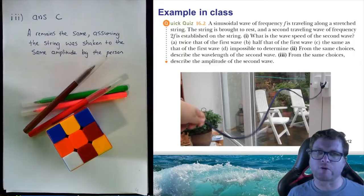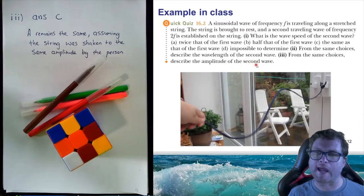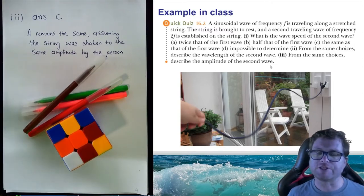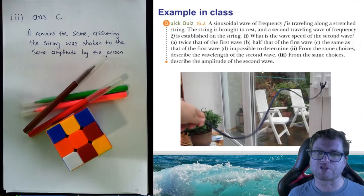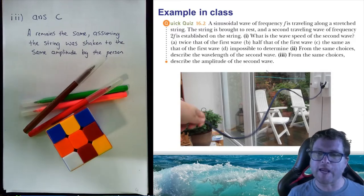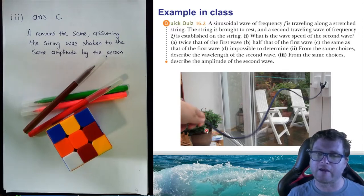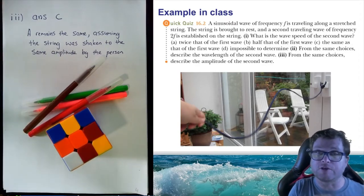For part three, we've been asked about the amplitude of the wave. From the same choices, what will happen to the amplitude if we double the frequency? The solution is that it will remain exactly the same — assuming the string was shaken to the same amplitude by the person. Increasing the frequency means shaking the string quicker, but the displacement of your hand moving up and down determines the amplitude. So for number three, the answer is C — the amplitude will remain the same.